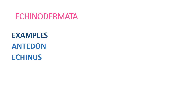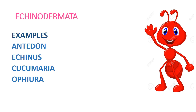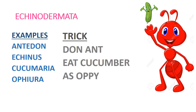The next phylum is Echinodermata. The examples are Asterias, Echinus, Cucumaria, and Ophiura. Remember an Ant that is a Don, and a Cucumber. The trick is 'Don Ant eat Cucumber as Opie': from 'Don Ant' it's Asterias, from 'Eat' it's Echinus, from 'Cucumber' it's Cucumaria, and from 'Opie' it's Ophiura. Very simple — you will easily remember the examples.